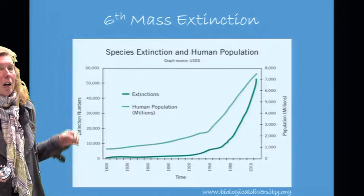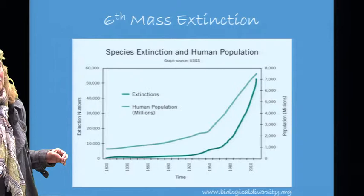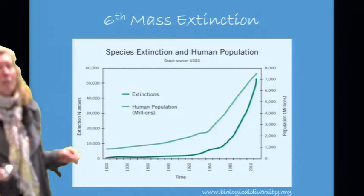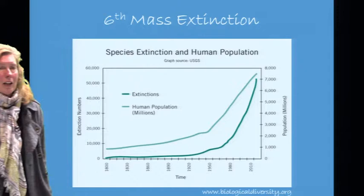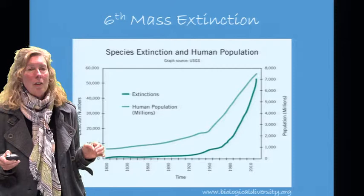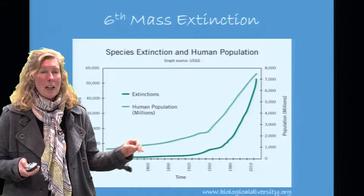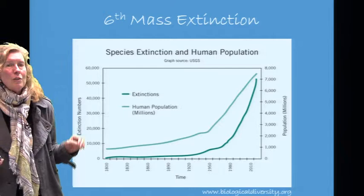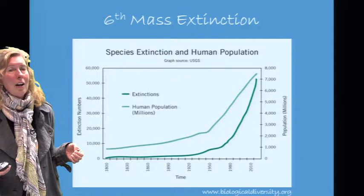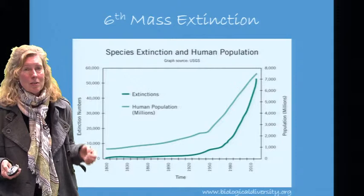Looking at species extinctions alongside human population, on the left y-axis we have extinction numbers in the tens of thousands; on the right y-axis we have human population in the millions. We see that familiar J-curve — exponential growth — indicating that what we are measuring is happening very, very rapidly. Extinction growth is very closely mirroring human population growth, indicating that human population growth is influencing these extinctions.